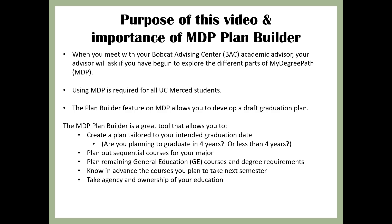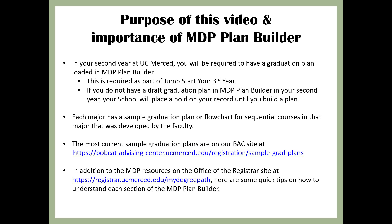Take agency and ownership of your education. In your second year at UC Merced, you will be required to have a graduation plan loaded in MDP Plan Builder. This is required as part of Jump Start your third year. If you do not have a graduation plan in your second year, your school will place a hold on your record until you build a plan. Each major has a sample graduation plan or flow chart for sequential courses developed by the faculty. The most current sample graduation plans are on the BACU site, and additional MDP resources are available on the Office of the Registrar site.